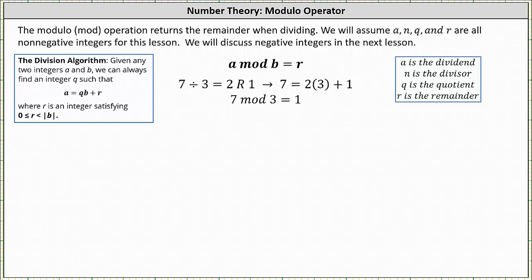Welcome to a lesson on the modulo operator. The modulo or mod operation returns the remainder when dividing. We will assume a, n, q, and r are all non-negative integers for this lesson. We will discuss negative integers in the next lesson.